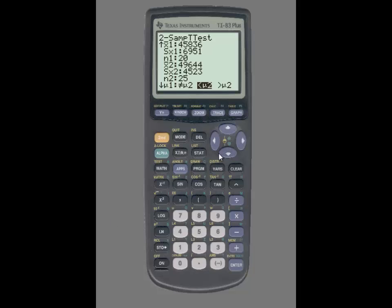Now, I need to select the option to make the test statistic pooled or not pooled. By performing an F-test to determine if the variances are equal or not equal, it was determined that in this case the variances were not equal. Therefore, the test statistic is not pooled so I am going to set pooled to NO. I am then going to scroll down to highlight CALCULATE and press enter.